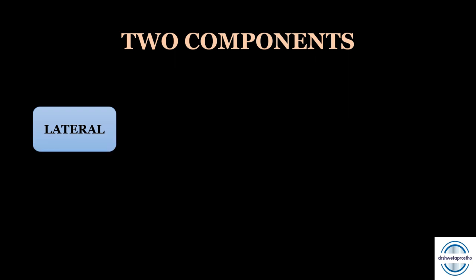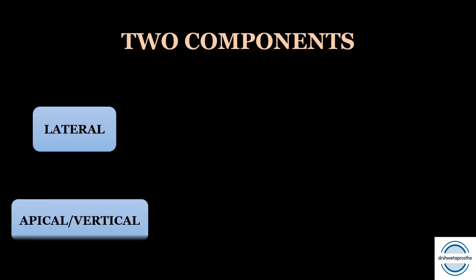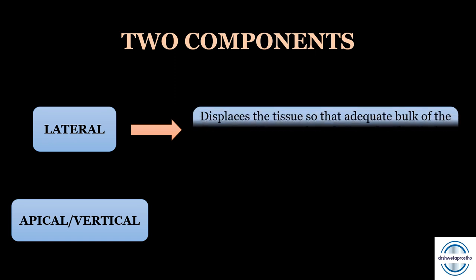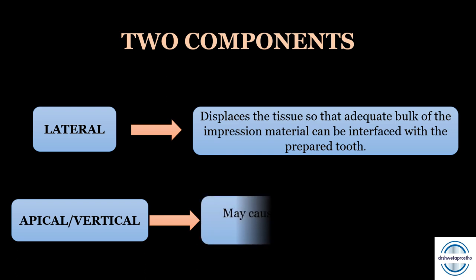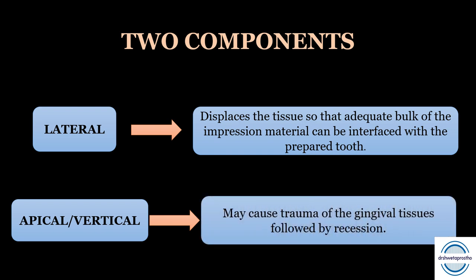There are two components in gingival displacement. First is lateral displacement and second is apical or vertical displacement. Lateral displacement displaces the tissue laterally so that the finish line prepared for the crown will be accessible and adequate bulk of impression material can interface with the prepared tooth. Apical or vertical displacement can cause trauma to the gingival tissues followed by recession.